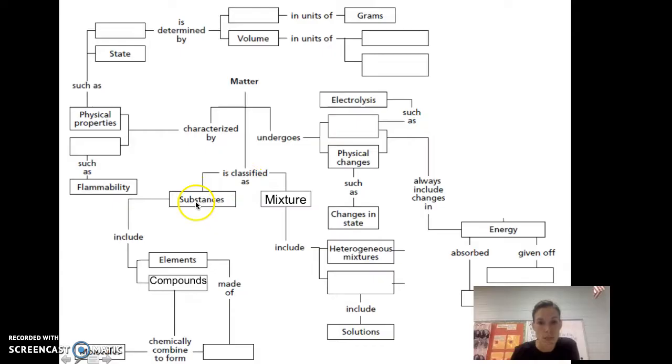Going this way, substances include elements and compounds. Elements are made of atoms which chemically combine to form molecules. Mixtures include heterogeneous mixtures, homogeneous mixtures, and homogeneous mixtures include solutions. Heterogeneous mixtures have different parts - you can see the different parts. Homogeneous mixtures - it looks the same throughout, we can't tell the difference.